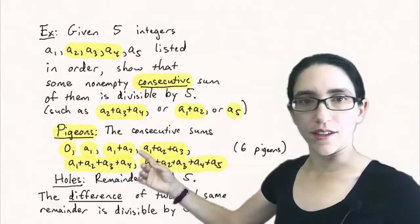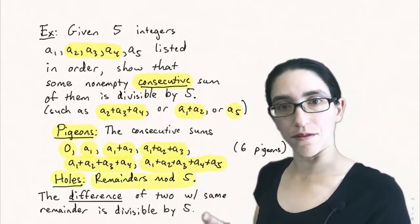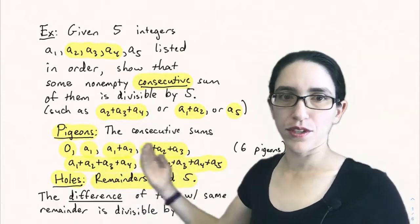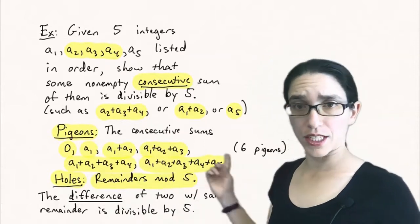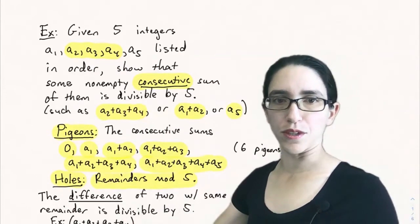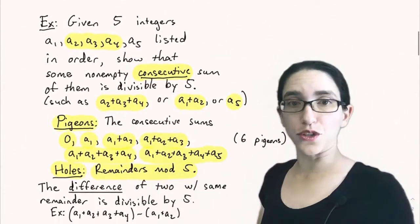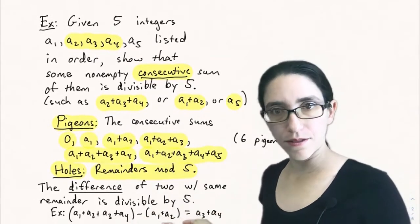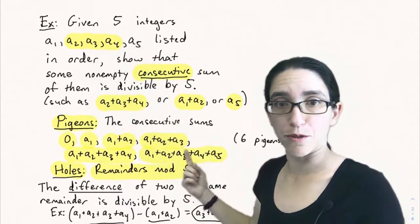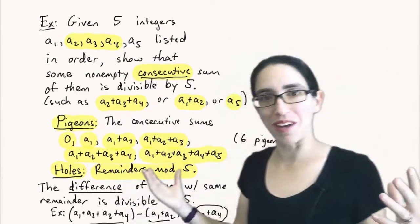There are six pigeons, and if we consider the holes to be remainders mod five, then the difference of two numbers that have the same remainder mod five has to be divisible by five. By the pigeonhole principle, some two of these consecutive sums have the same remainder when divided by five, since there are six pigeons and five holes. For example, if the two matching sums are a1 plus a2 plus a3 plus a4 and a1 plus a2, their difference — a3 plus a4 — is divisible by five. In fact, every consecutive sum can be represented as a difference of two of these initial sums starting at a1.